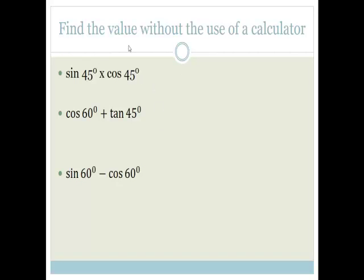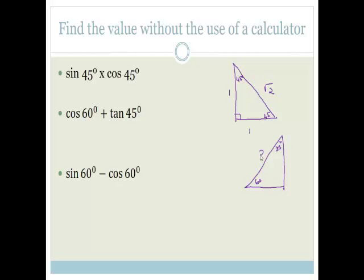Now it says find the value without the use of a calculator, and what they want us to do is know our special triangles. There are two special triangles you should have learned. The first is the 45-45 triangle with sides 1, 1, and root 2. The second is the 60-30 triangle, where this is 60 degrees, this is 30 degrees, and the sides are 2, 1, and root 3. If you don't remember them, please go learn them. And if you don't understand what I'm doing — because I'm going fast since it's revision — go back to the weeks where I taught this slowly.